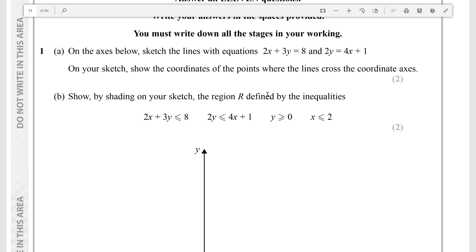Alright, so this question is asking us to sketch these two lines here - sketch the lines where the equation is 2x plus 3y equals 8 and 2y equals 4x plus 1, and on the sketch we must show the coordinates of the points where lines cross the coordinate axes.